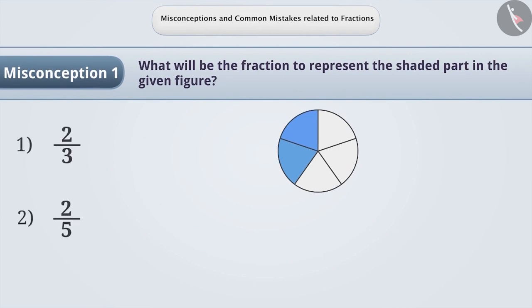Sometimes, while representing a fraction, it is understood that the numerator corresponds to the number of shaded parts of the figure and the denominator corresponds to the remaining part that is not shaded. By doing so, the fraction is represented as part by part.